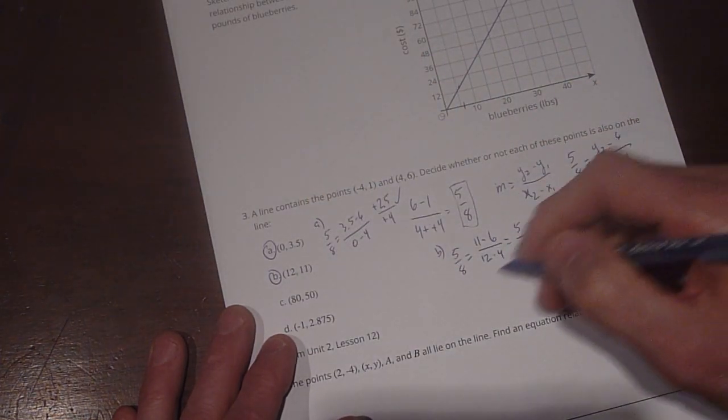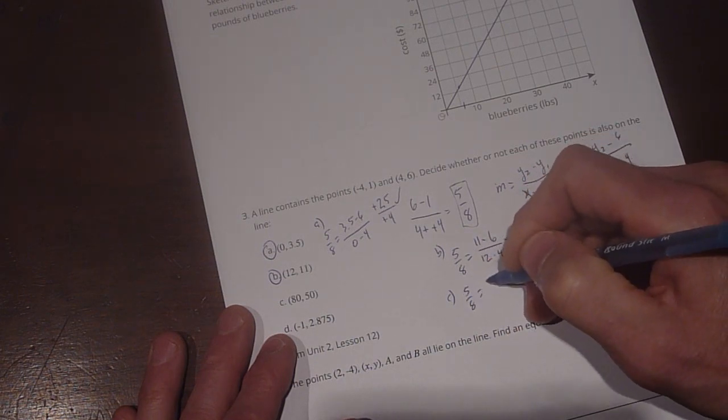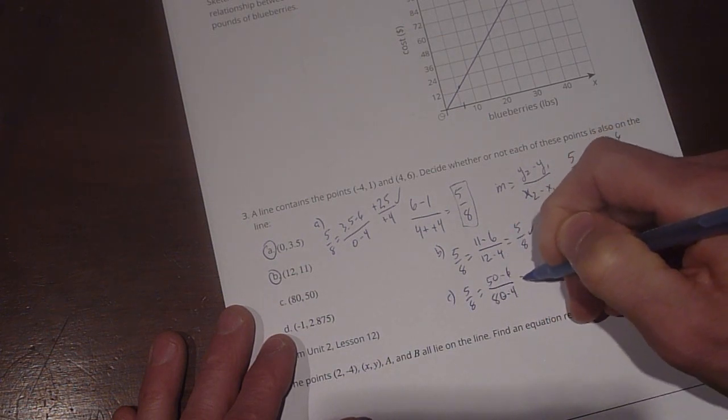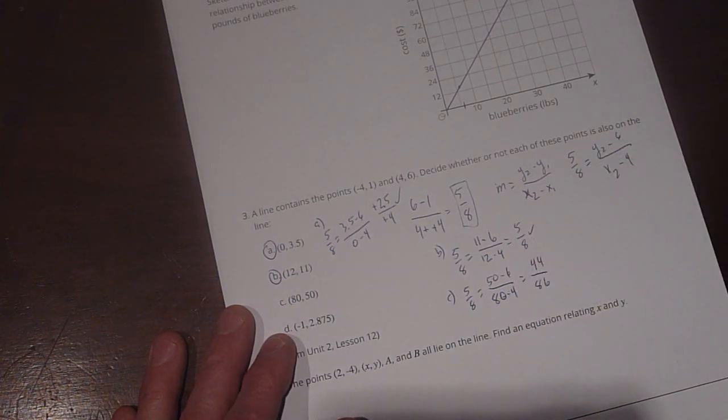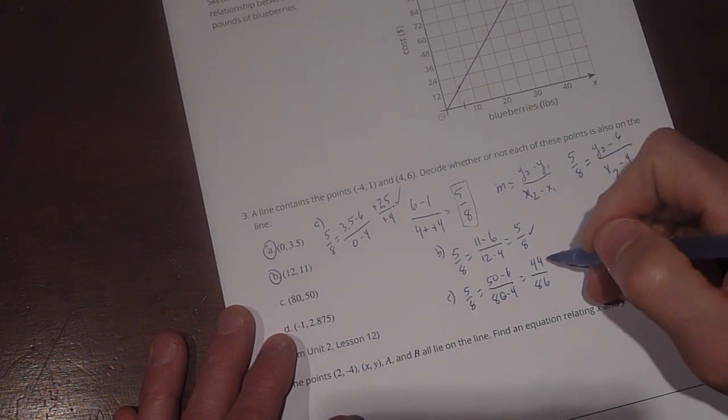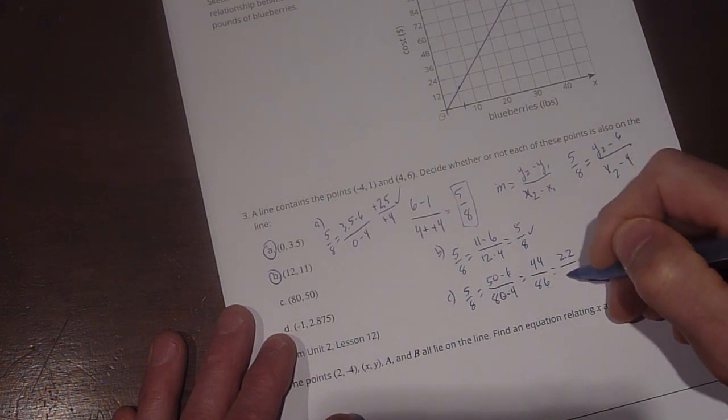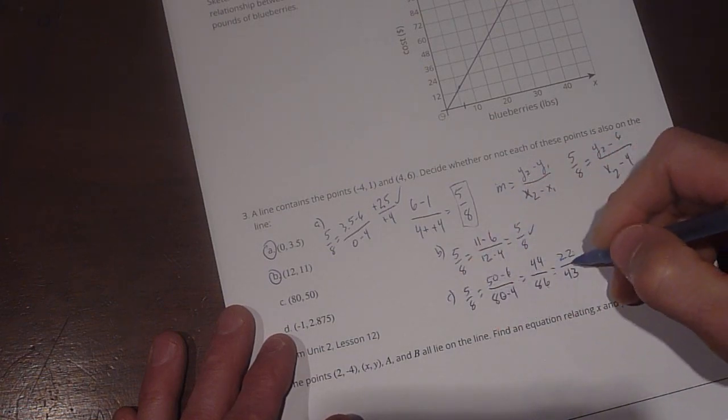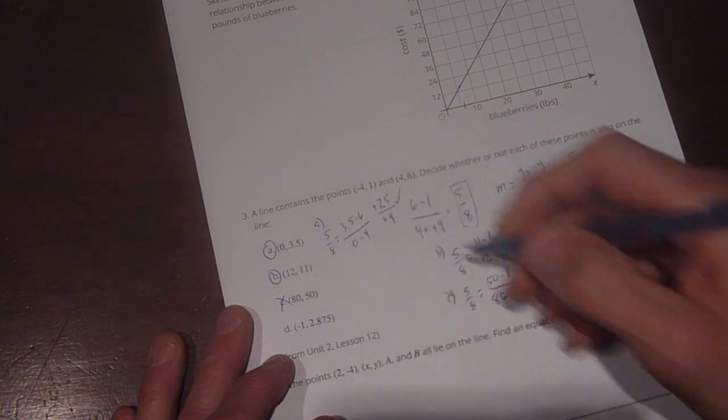Alright, now c. 5/8 equals (50 - 6) divided by (80 - 4). So that 50 minus 6 is going to give us 44. 80 minus 4 is going to give us 86. So we reduce these as much as we can, 44 and 86, they've got a common factor of 2 so we can say that's 22 divided by 43, and I don't think we can reduce those anymore. So they do not equal, this doesn't equal 5/8, so that's not on the same line. So C does not work.